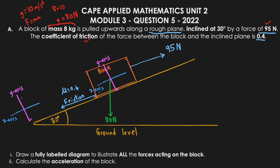Extending the y-axis and x-axis from the block's position, we can see that the 80 newton force is the hypotenuse of a right triangle. Because the incline is at 30 degrees, the angle inside this triangle is also 30 degrees. The blue line represents the x-component (Wx) and the other line represents the y-component (Wy) of the 80 newton gravitational force.